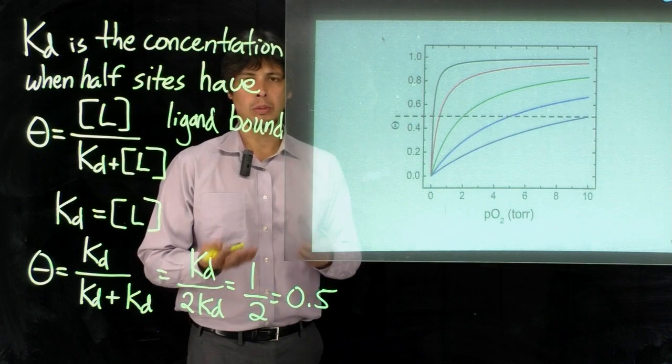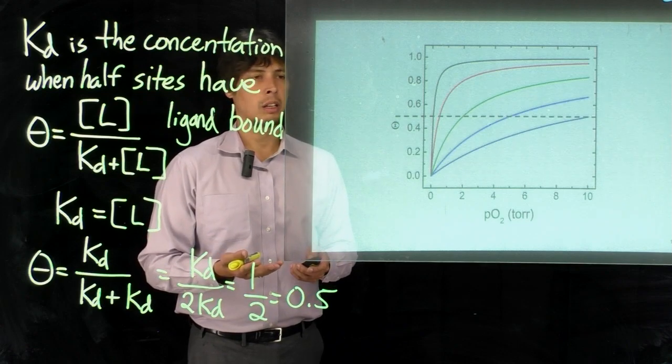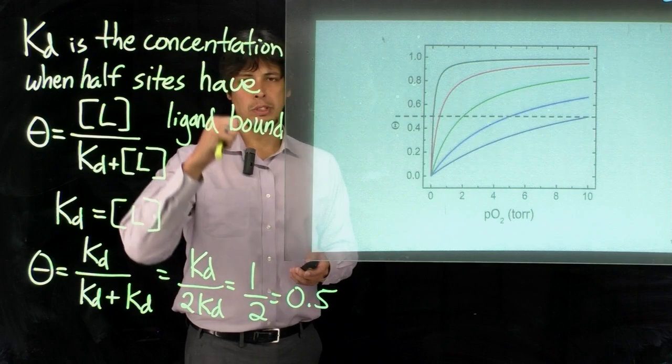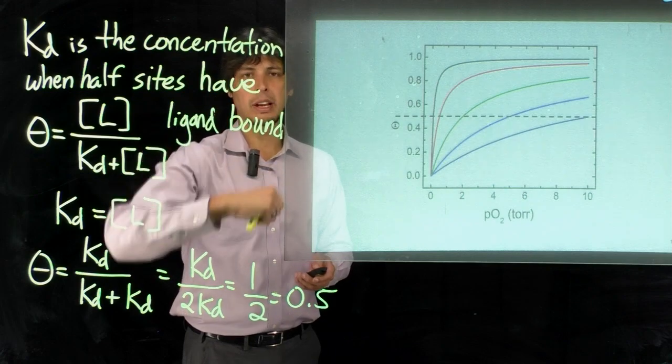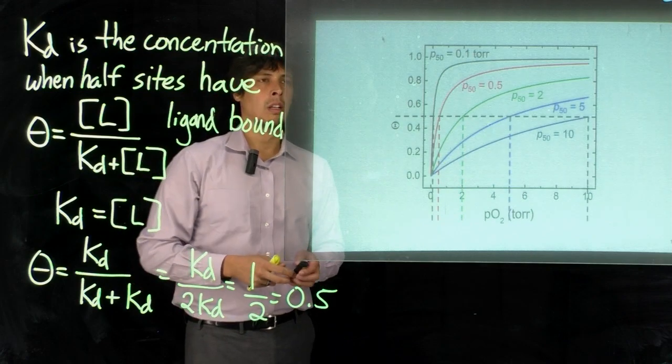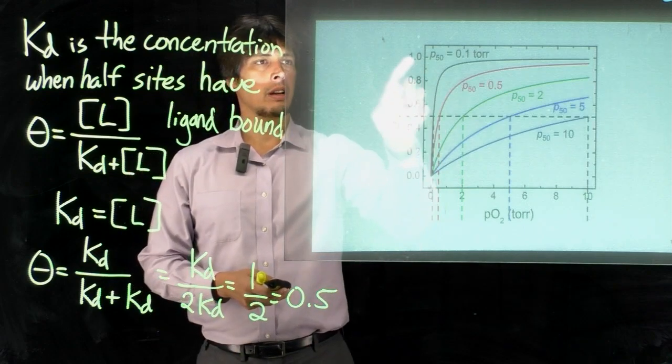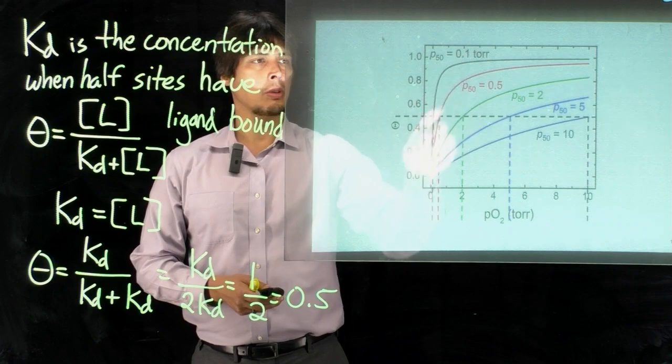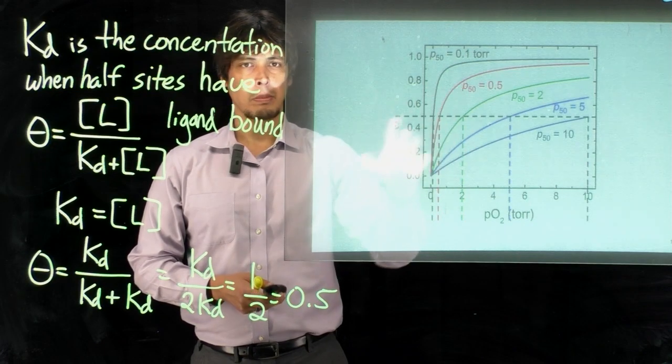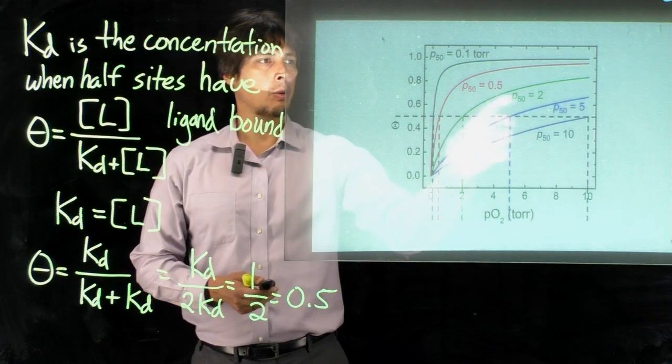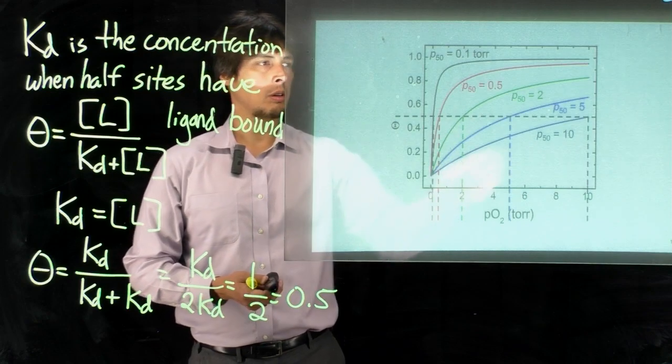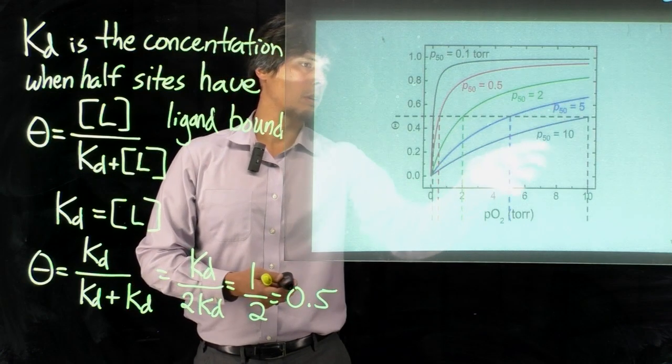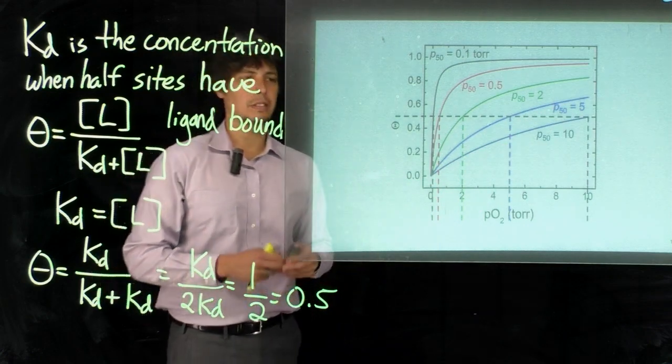So again we set a line across theta equals 0.5 and then project a line from each of these curves down to the x-axis like this. And these will cross then at, for instance, for the black trace a P50 of 0.1 torr, for the red trace a P50 of 0.5 torr, the green a P50 of 2 torr, the blue a P50 of 5 torr, and the dark blue a P50 of 10 torr.